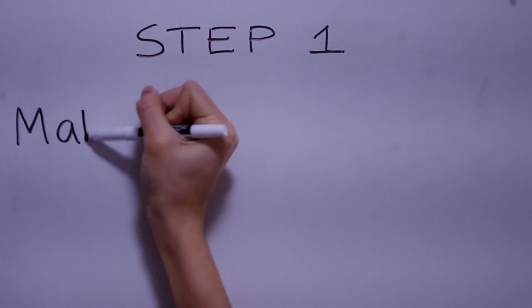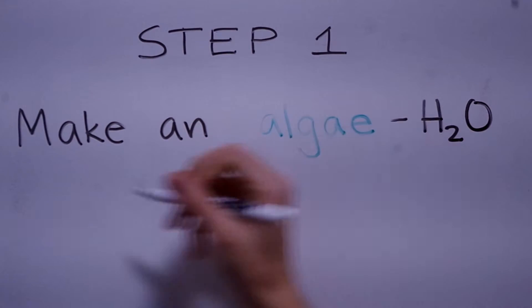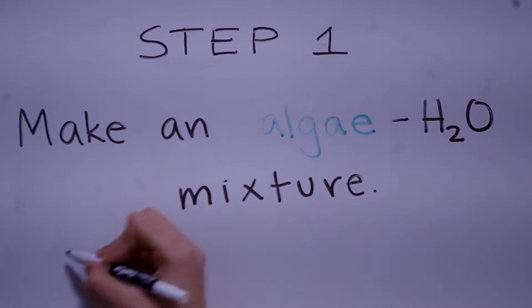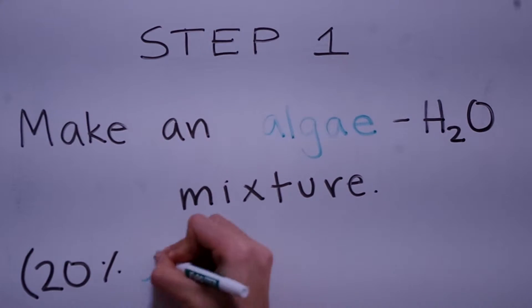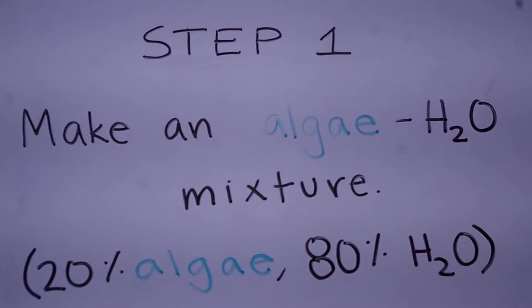The first step involves creating an algae-water mixture. While the best type of algae to use is still being researched, we do know that the mixture should be 20% algae and 80% water. These proportions should be calculated by weight.